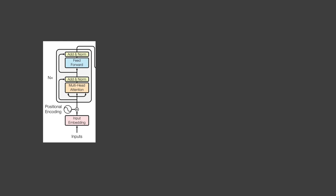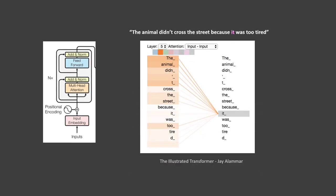In order to understand this concept better, consider an example sentence: 'The animal did not cross the street because it was too tired.' This example is taken from the blog published by J.L. Alammar. In this sentence, what does 'it' refer to — the street or the animal? When the model is processing the word 'it', self-attention allows it to associate 'it' with 'animal'. As the model processes each word in the input sequence, self-attention allows it to look at other positions for clues that help with better encoding of that word.